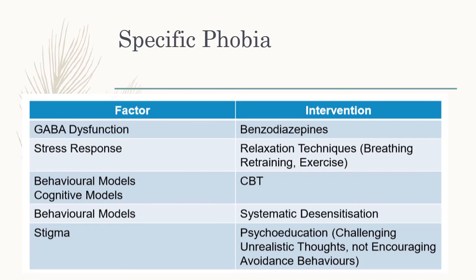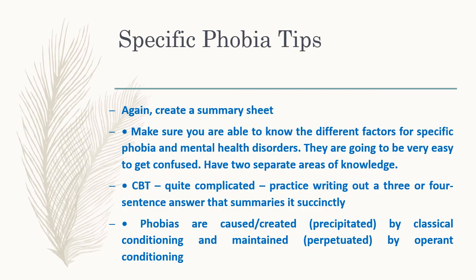So that's a breakdown of the factors that lead to a phobia and the interventions for them. Create a summary sheet — make sure you know the different factors for specific phobias versus mental health disorders, as they're easy to confuse. Have two separate areas of knowledge; do not mix the mental health stuff with the phobia stuff. CBT is quite complicated, so practice writing three or four sentence answers that summarize it succinctly. Remember, phobias are precipitated by classical conditioning and maintained and perpetuated by operant conditioning — that one comes up a lot. If you have any questions, don't hesitate to ask.